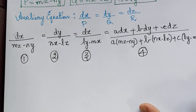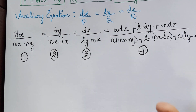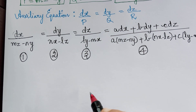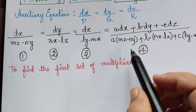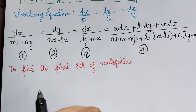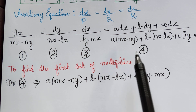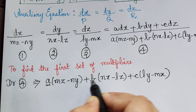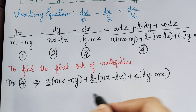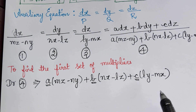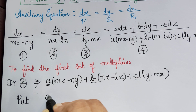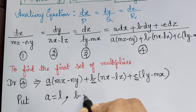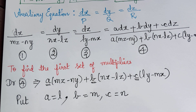Now we have to find two sets of multipliers in order to find the two solutions u and v. To find the first set of multipliers, we take the denominator of ratio 4 and we must choose values of a, b and c such that this denominator becomes 0.